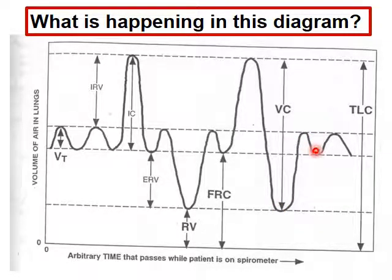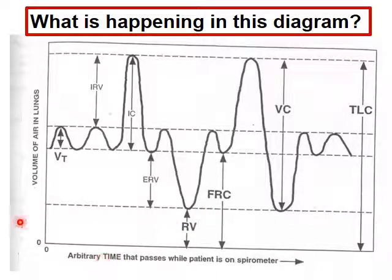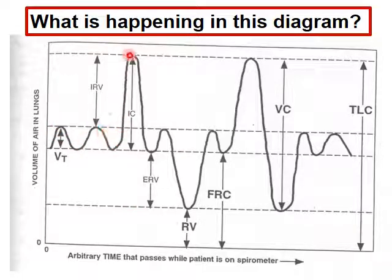Again: tidal volume, inspiratory reserve, expiratory reserve, inspiratory capacity, functional residual capacity, residual volume, total lung capacity. Time passes — and the line on the graph represents the amount of air volume in the lungs at any one time.